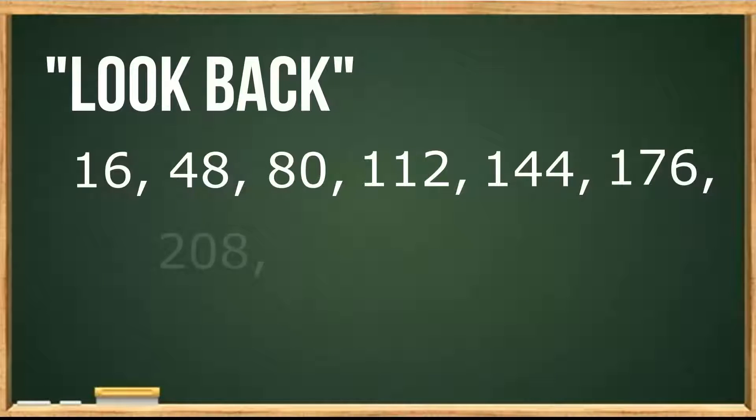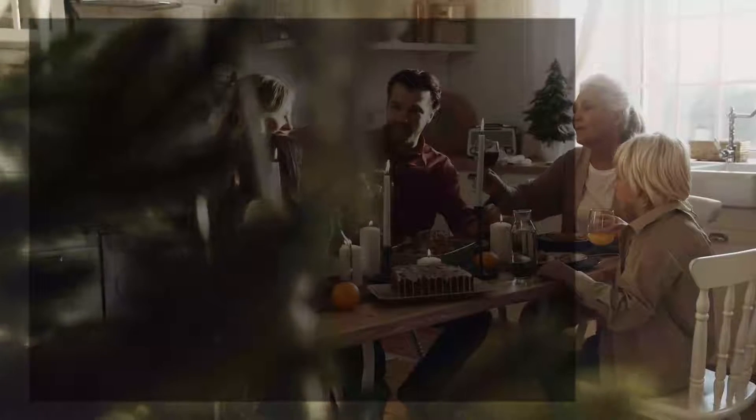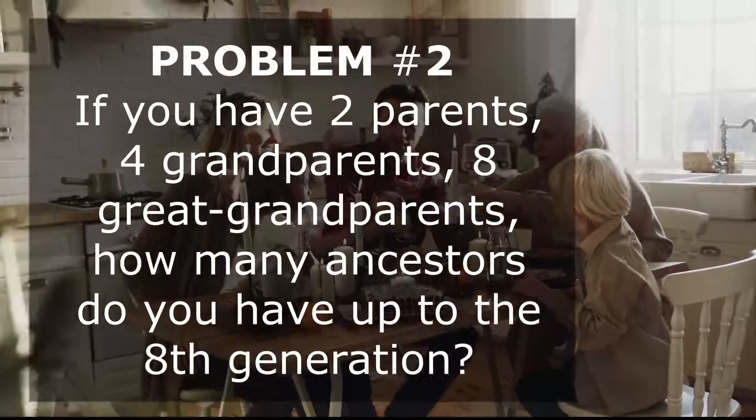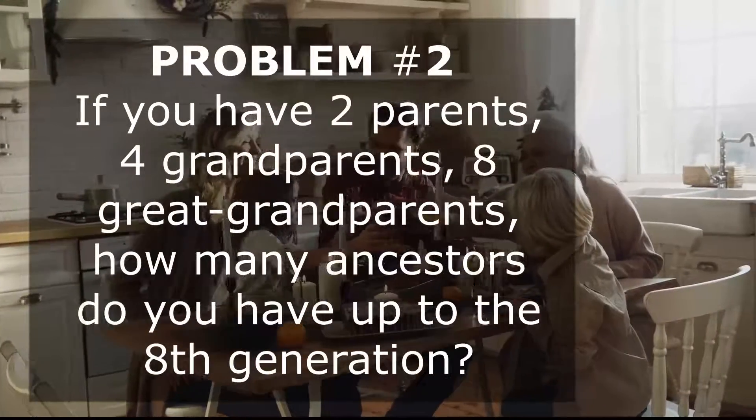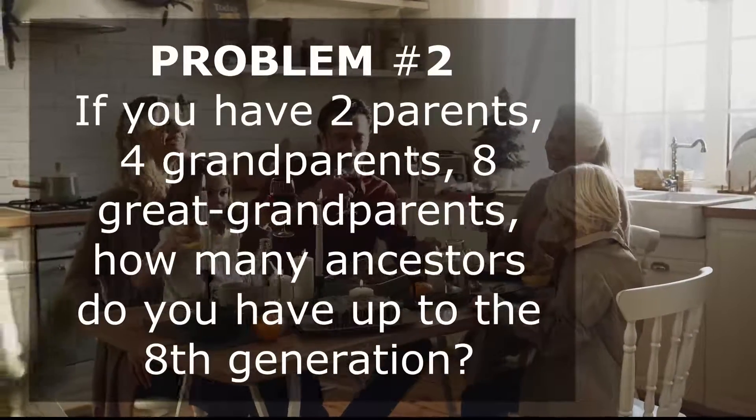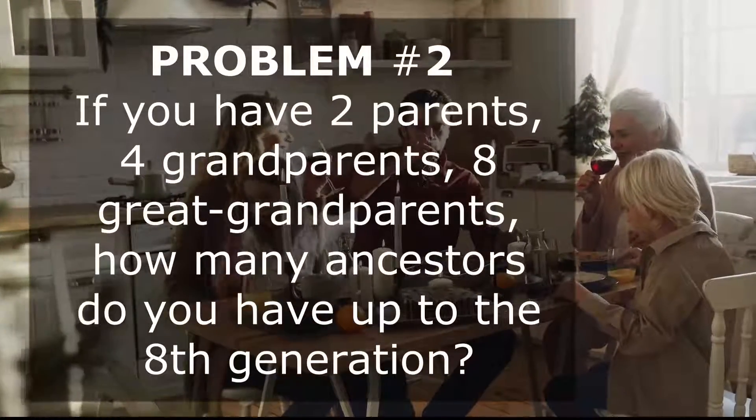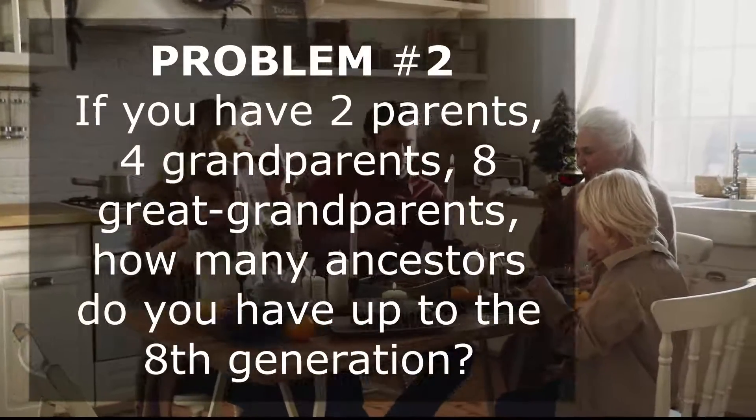We can just continue the sequence until we reach the tenth term. From 16, 48, and 80, we will have 112, 144, 176, 208, 240, 272, and as you can see, the tenth term is 304. Let's have Problem 2. If you have two parents, four grandparents, eight great-grandparents, how many ancestors do you have after the eighth generation?